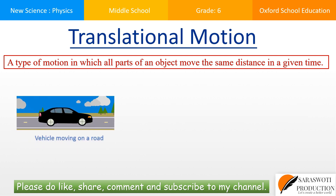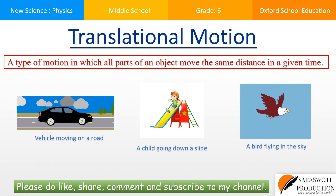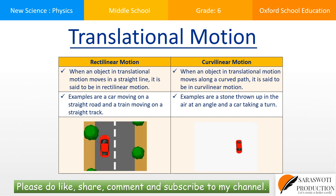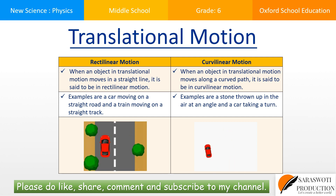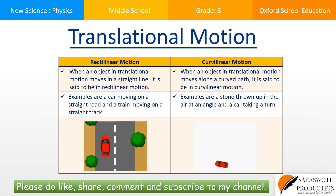Examples of translational motion are vehicles moving on a road, a child going down a slide, and a bird flying in the sky. Translational motion can be of two types: rectilinear and curvilinear. The table shows the difference between the two. Rectilinear motion is when an object in translational motion moves in a straight line. Curvilinear motion is when an object in translational motion moves along a curved path. Examples of rectilinear motion are a car moving on a straight road and a train moving on a straight track. Examples of curvilinear motion are a stone thrown up in the air at an angle and a car taking a turn.